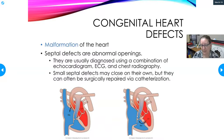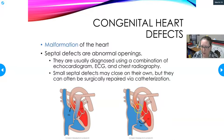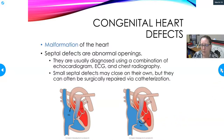Another congenital condition is the Tetralogy of Fallot, which involves four cardiac abnormalities. It's often associated with Down syndrome and Edwards syndrome. Patients are at risk of hypercyanotic spells — turning blue suddenly — and the only true treatment is surgical repair. The four components include pulmonary stenosis, where the pulmonary artery opening is narrowed, making it hard for the right ventricle to push blood into the pulmonary trunk.